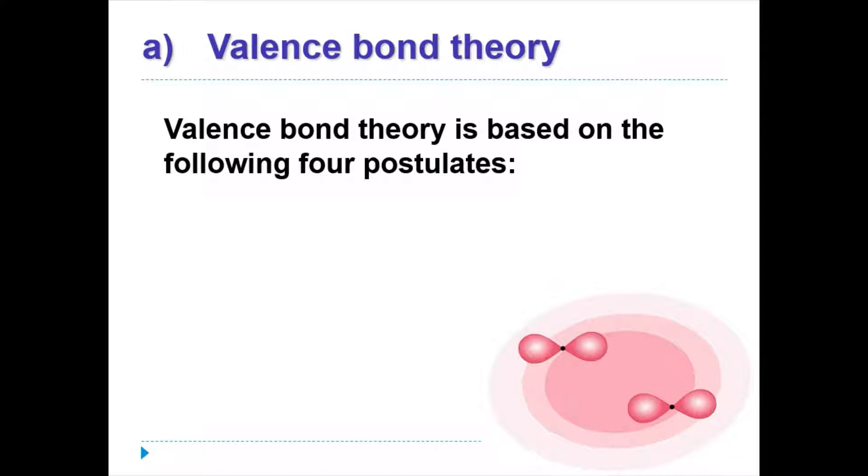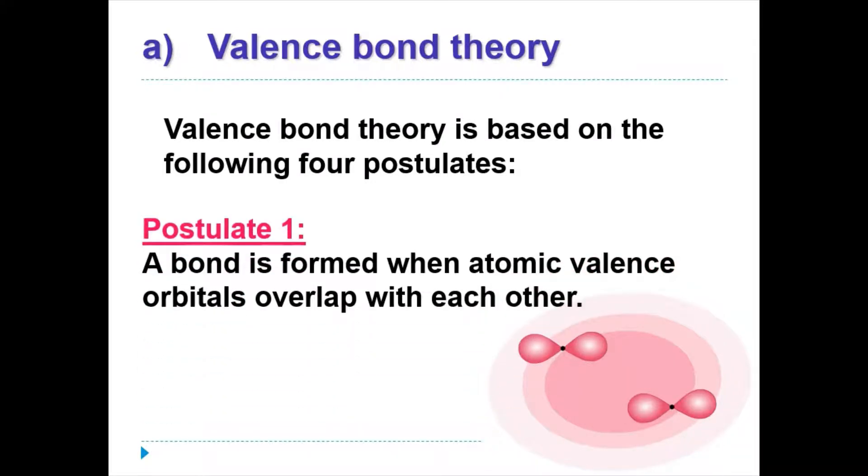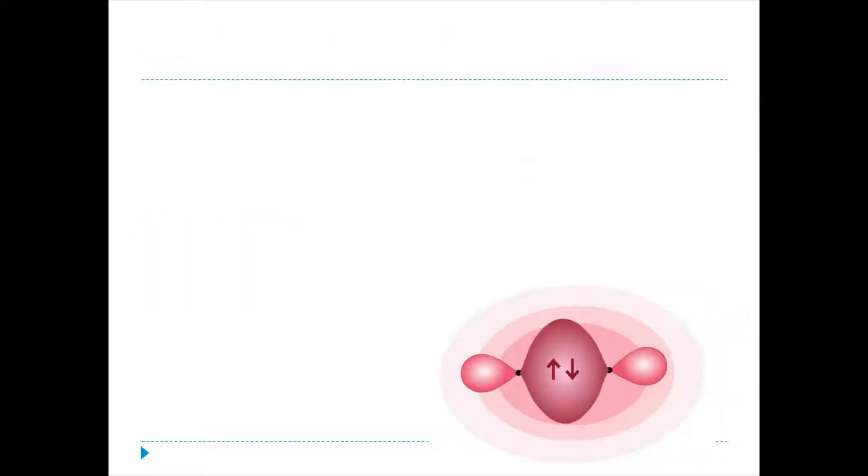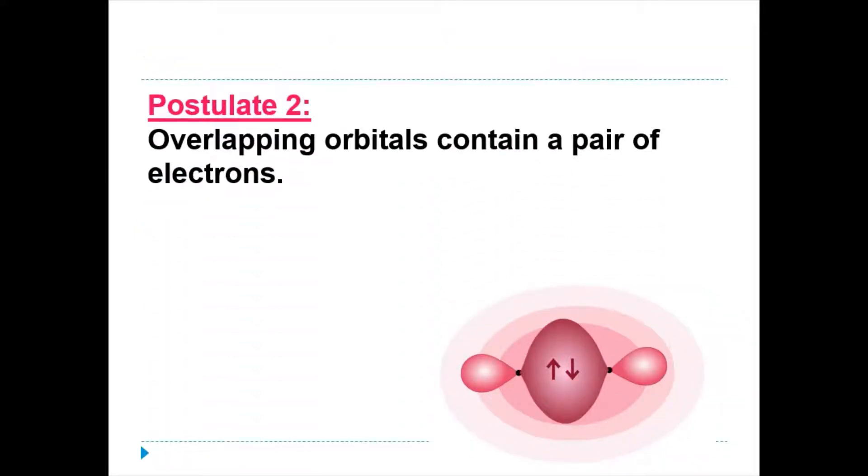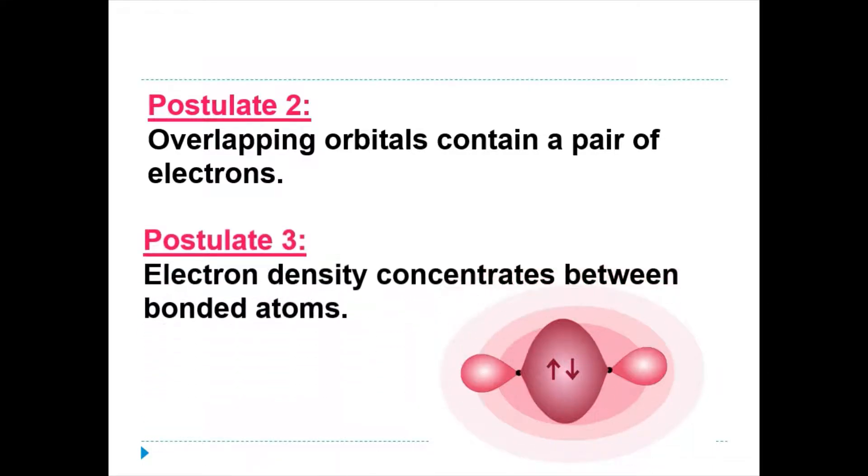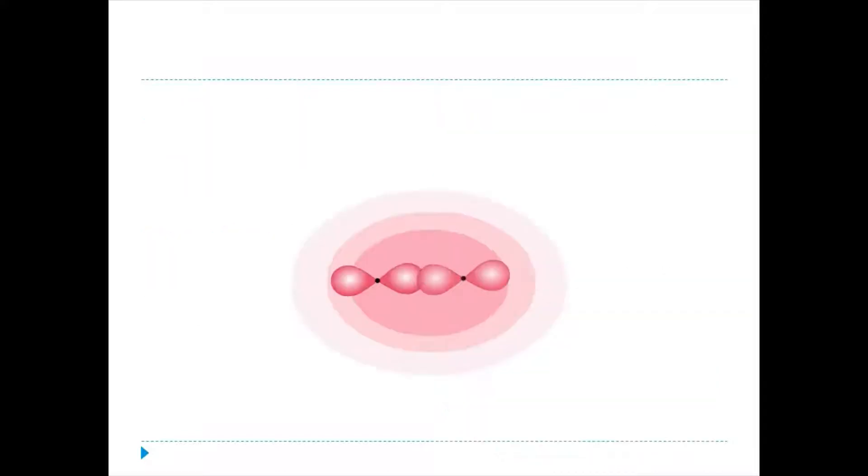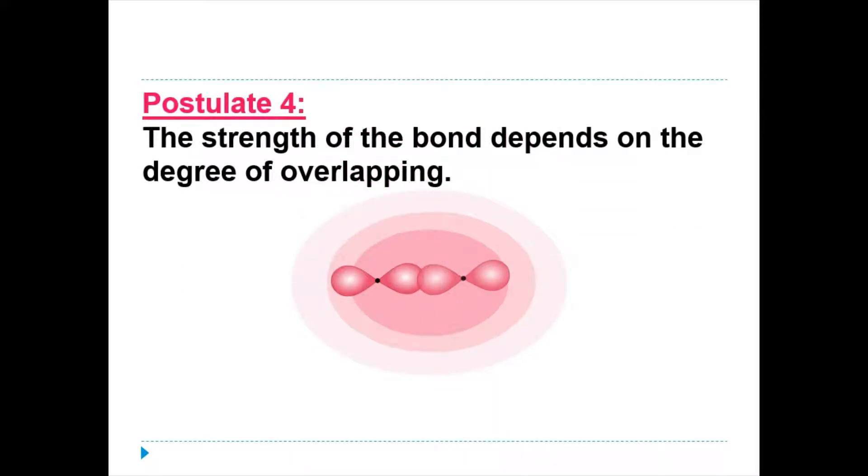Before anything else, we need to know what is valence bond theory. We have four postulates on valence bond theory. Number one: a bond is formed when atomic valence orbitals overlap with each other. Number two: overlapping orbitals contain a pair of electrons. Number three: electron density concentrates between bonded atoms. Number four: the strength of the bond depends on the degree of overlapping.